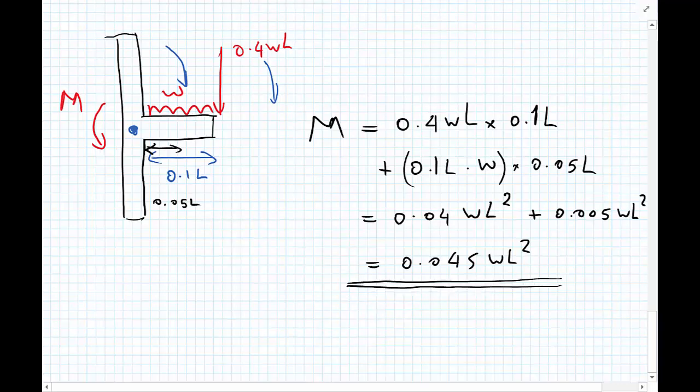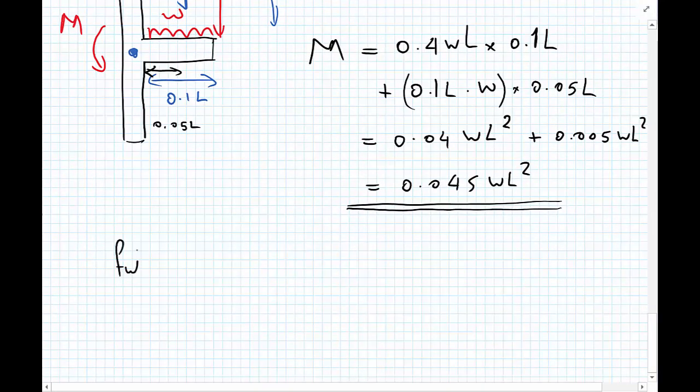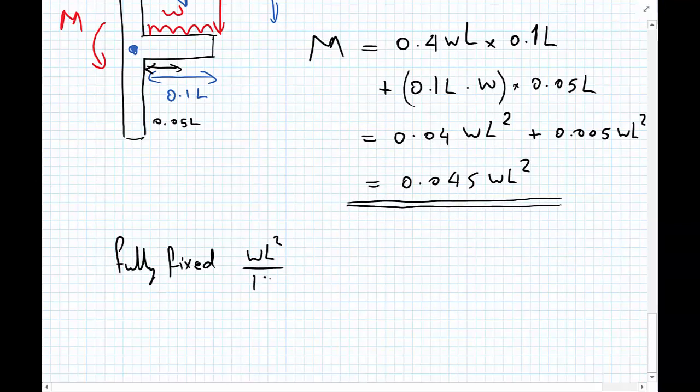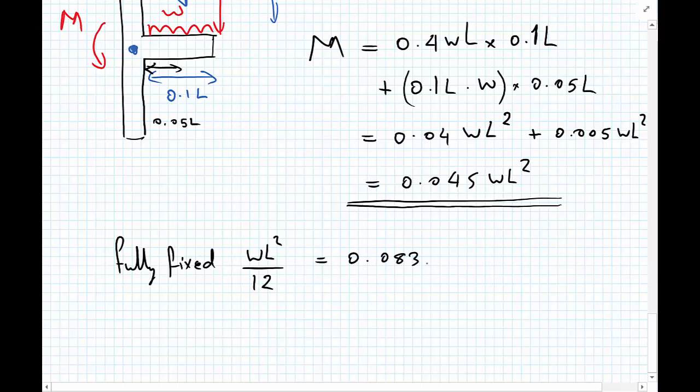So this is the moment we would expect at the intersection of the beam and the column. To remind ourselves, for fully fixed, the moment would be WL squared upon 12, which equals 0.083 WL squared. So we've halved the moment at the end.